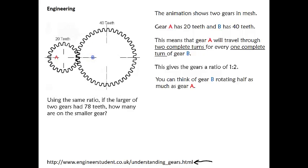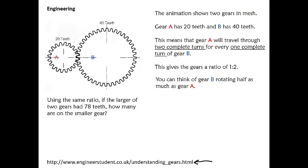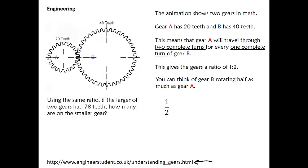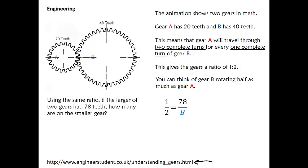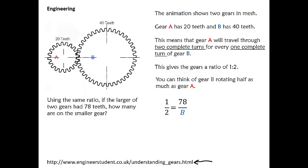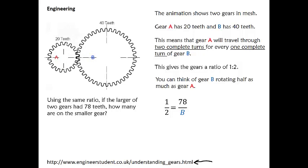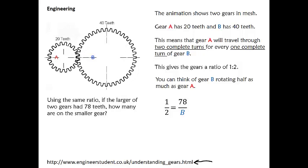So using the same ratio, if the larger of the two gears has 78 teeth, how many are on the smaller gear? We know that the ratio is 1 to 2. That would be A to B. So if the larger of the two gears has 78 teeth, we need to figure out how many teeth are needed on the smaller gear.